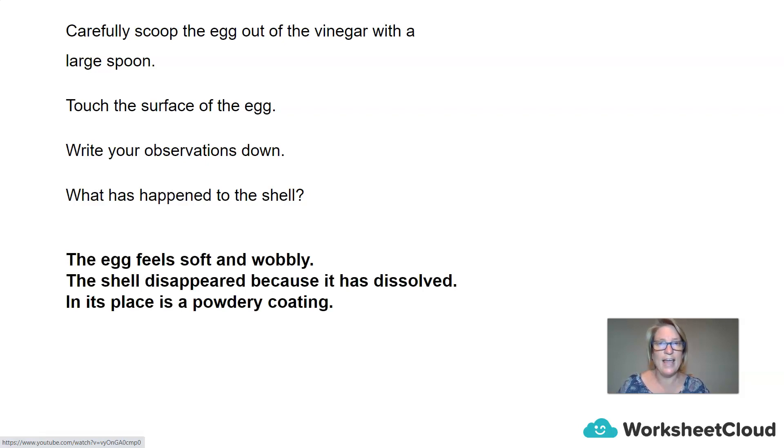So you should find that the egg is going to feel soft and wobbly and in actual fact be very careful not to bounce the egg because the egg is still raw and if you bounce it or drop it the egg is going to break and you're going to have raw egg everywhere. So all that has happened in this reaction is the shell has disappeared because it has dissolved. So in its place you should find that there's a powdery coating. So please be mindful that this egg has not gone through any physical changes. We haven't heated it, we haven't cooked it. So the egg is still raw. All we have done is taken away the egg shell.